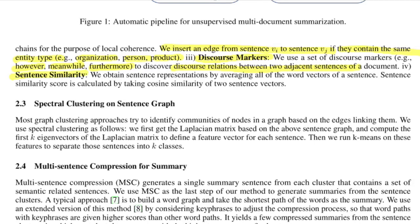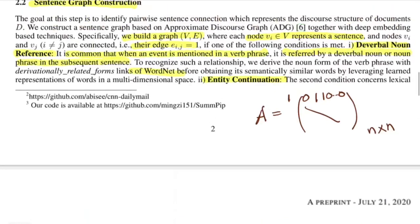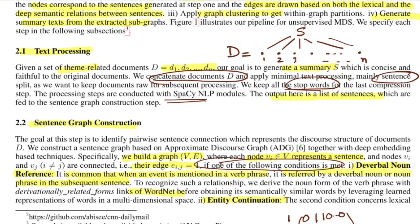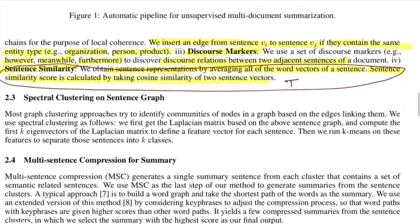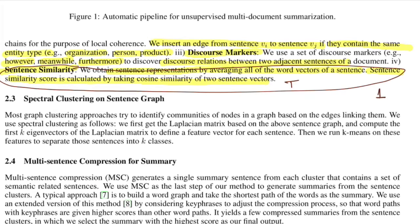The fourth condition is sentence similarity. A sentence representation is obtained by averaging all word vectors in a sentence, and similarity is calculated using cosine similarity between two sentence vectors. You construct sentence representations using word vectors from a pre-trained transformer or word2vec-type model and average them. There is some ambiguity in the paper about how the similarity score is utilized, since edge weights are set to one — it is probably used as a threshold-based condition only.